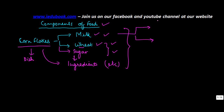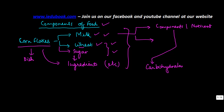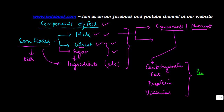Now each of these ingredients contains various components, also called nutrients. What are these nutrients? These nutrients are basically carbohydrates, it could be fat, it contains protein, vitamins, and certain other things. Each of these nutrients or components are essential for our body.